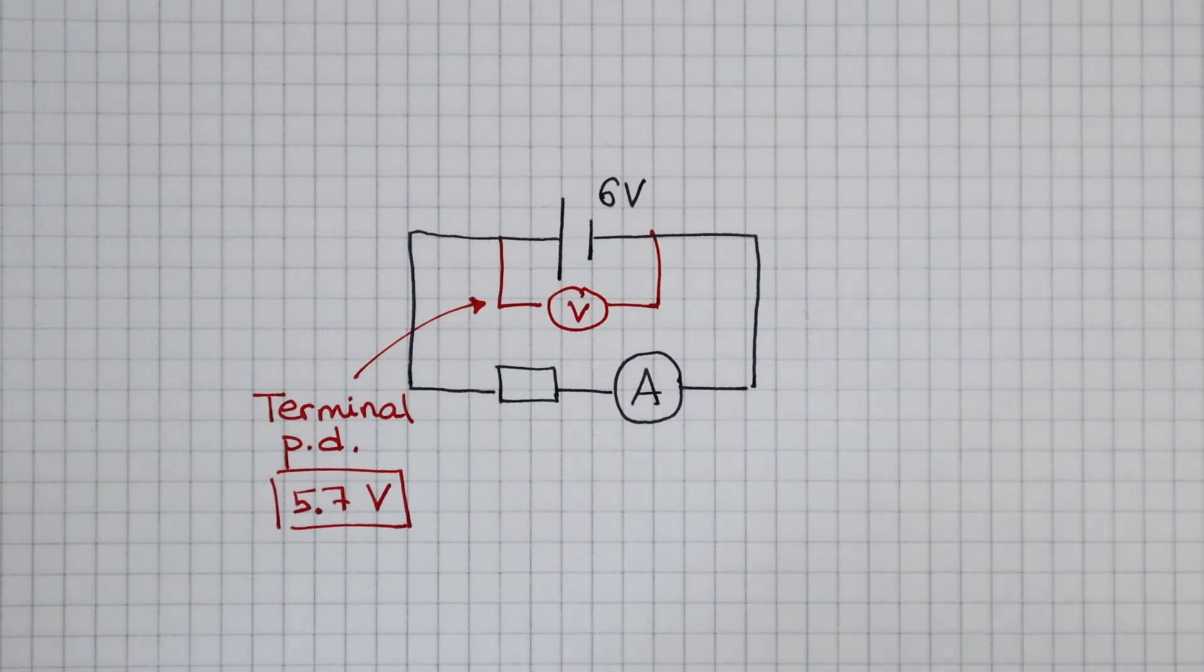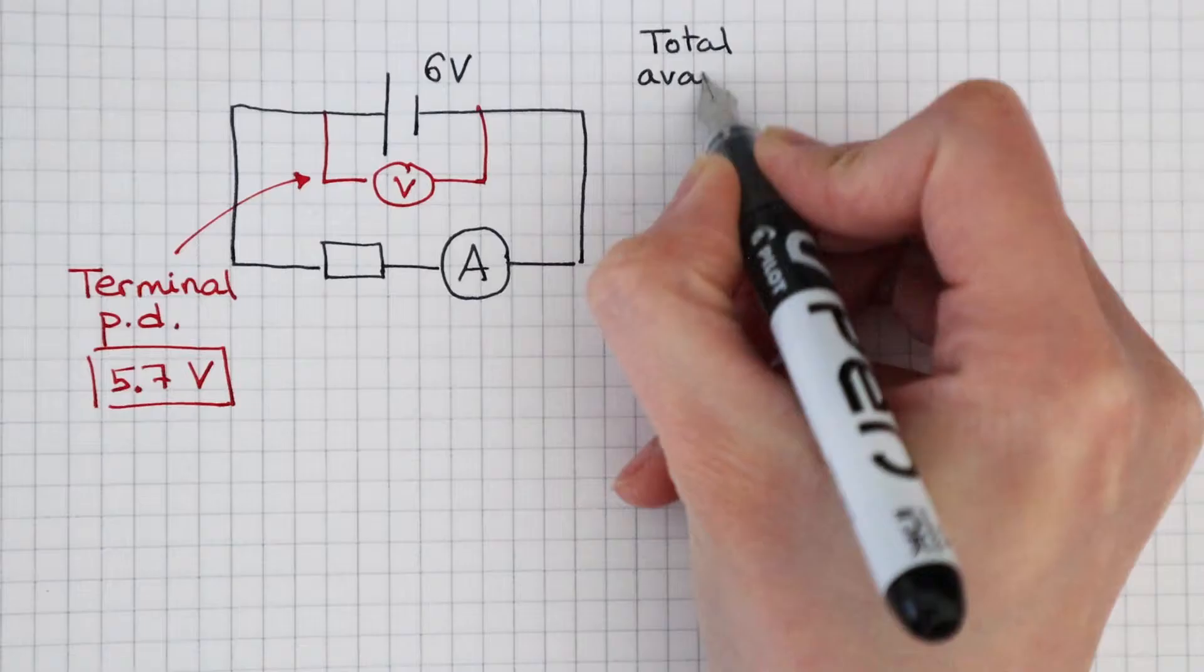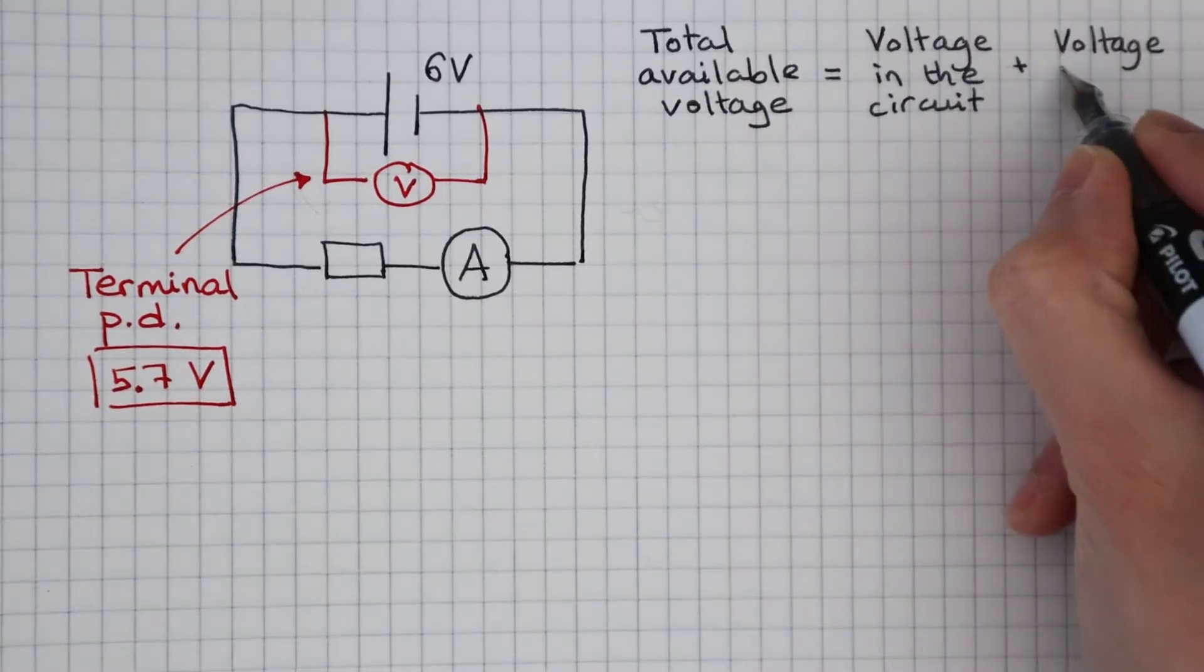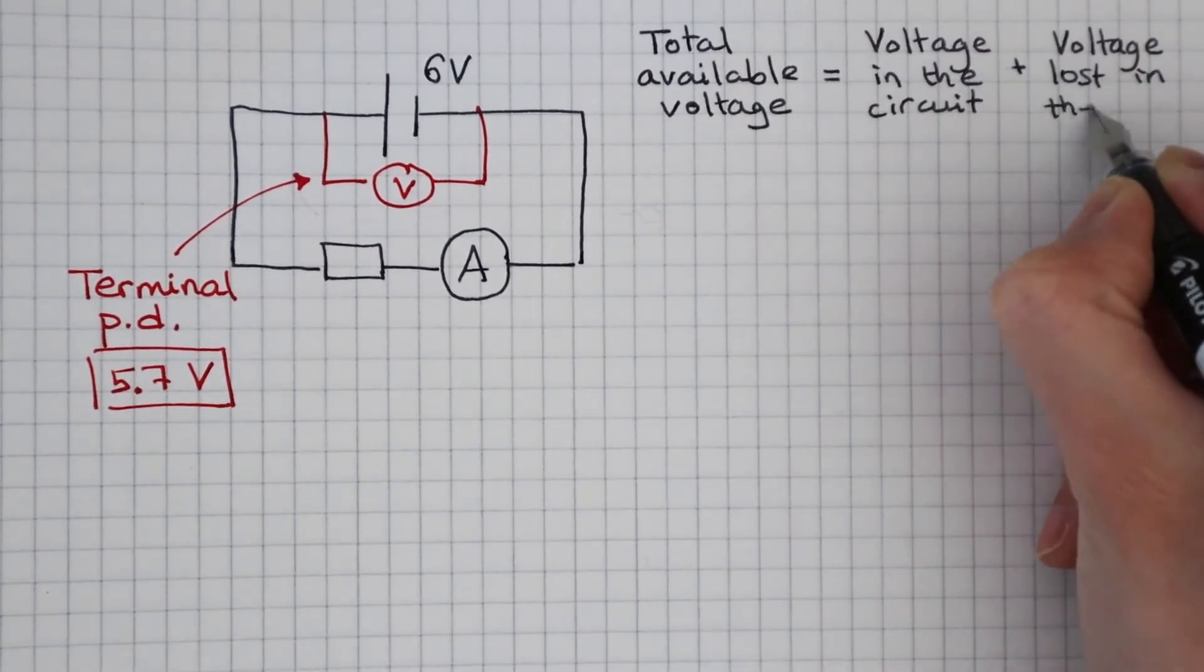That's because some of the 6 volts is lost within the cell. So we can write this: the total available voltage is equal to the voltage in the circuit plus the voltage lost in the cell.